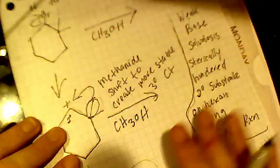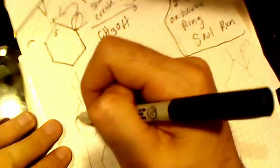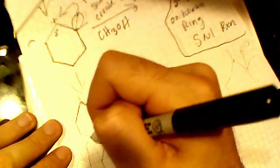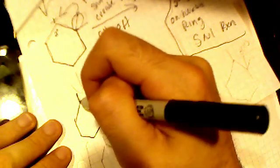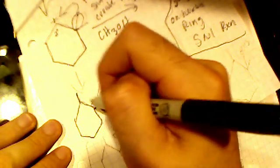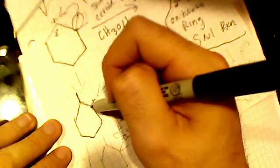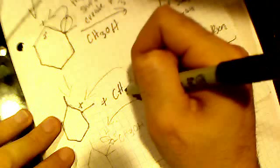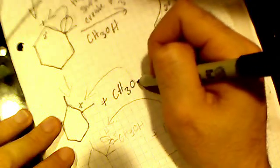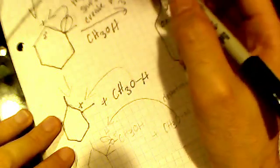So once we get that methyl shift, the carbocation moves right here, and this is a third-degree carbocation. One, two, three, plus our methanol.